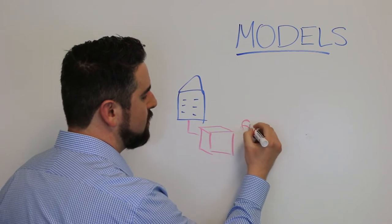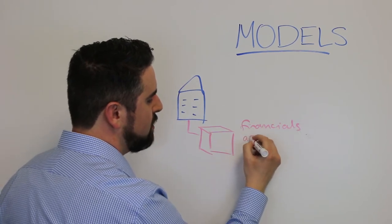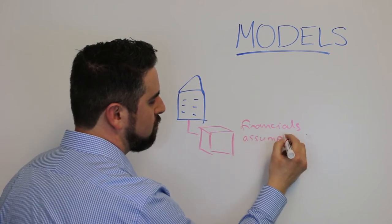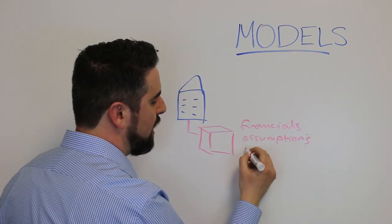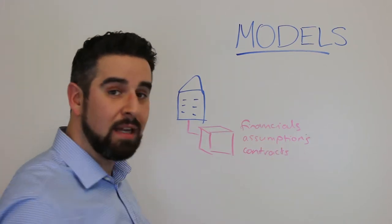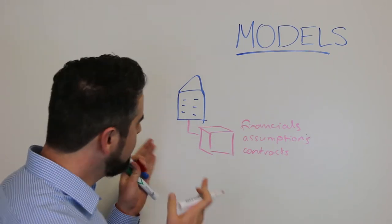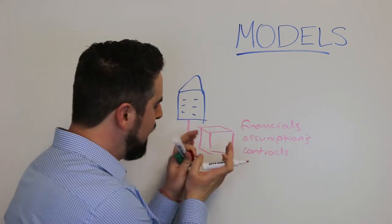We capture things like financials, assumptions, contracts like leases and debt contracts. So all the information that pertains to that particular property is captured in its base model which we call live.